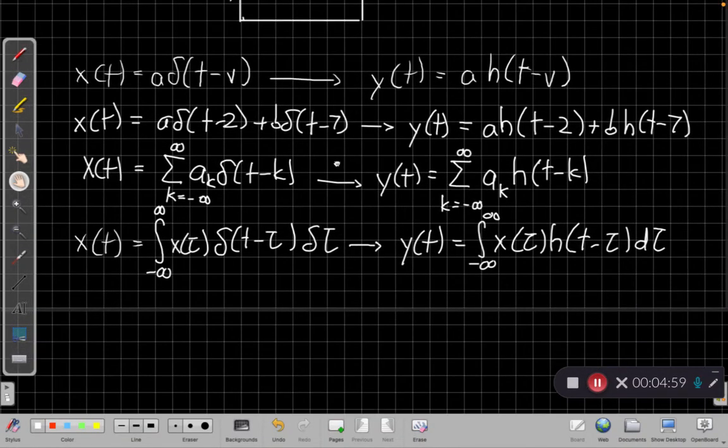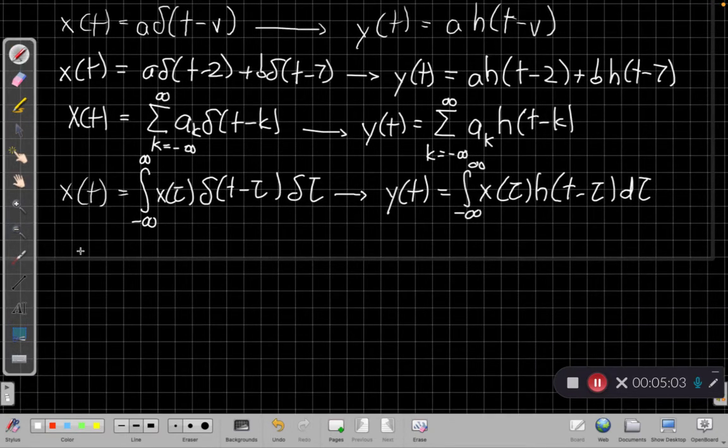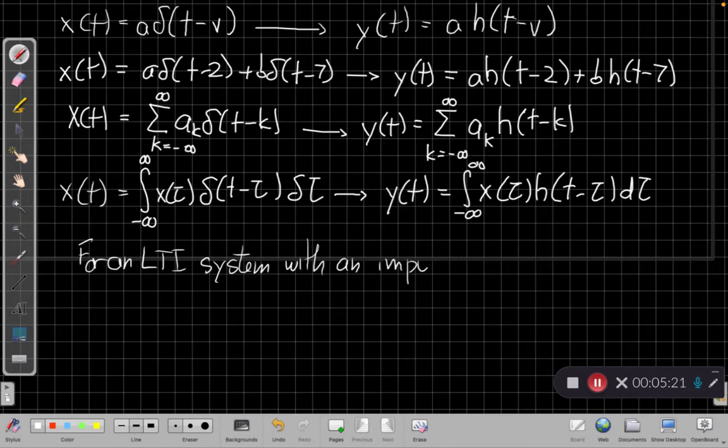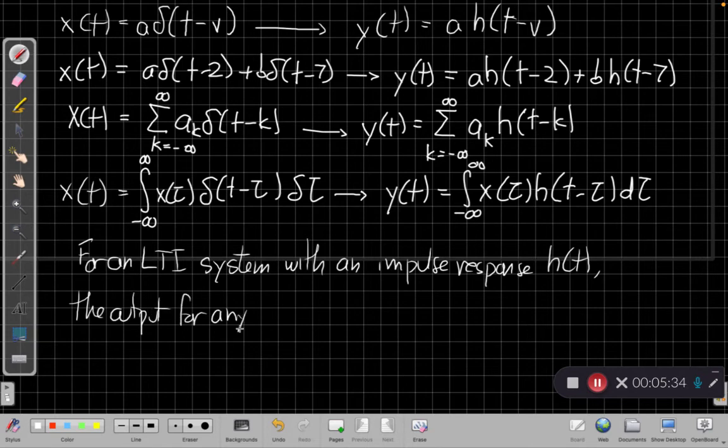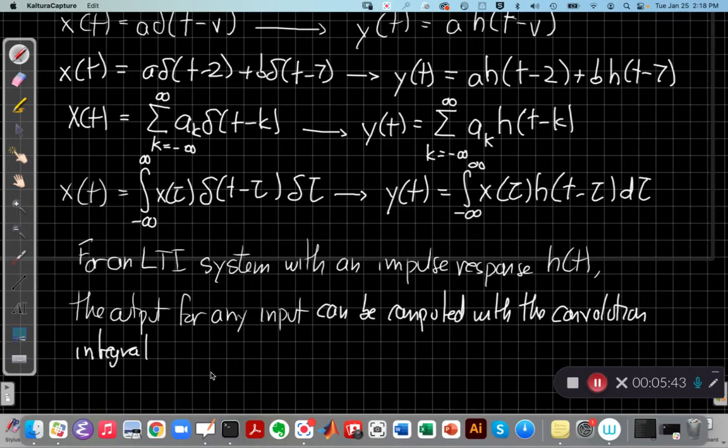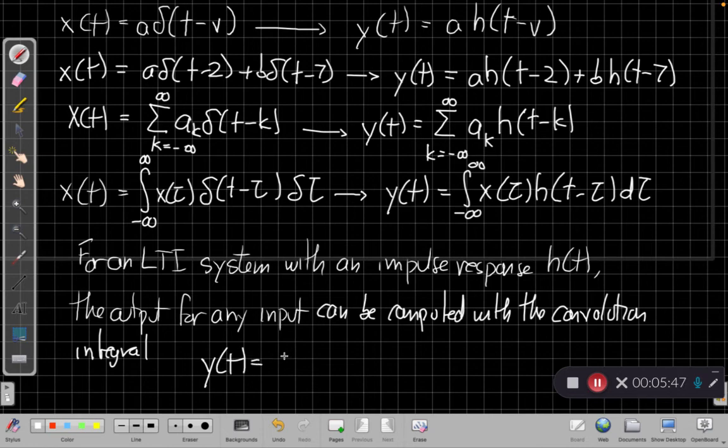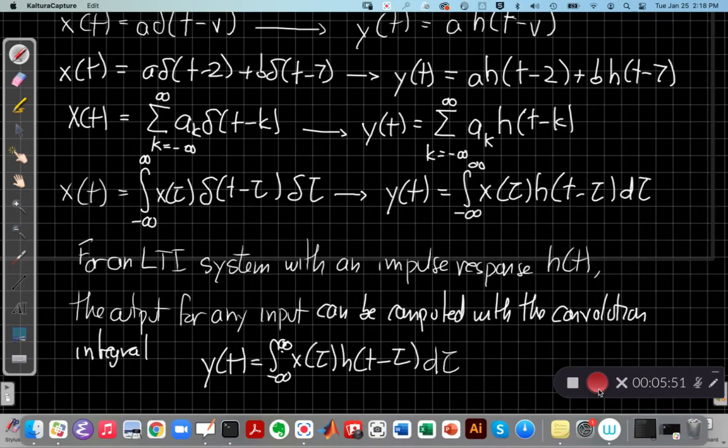That integral on the right-hand side is very important. The main result from this video is for an LTI system with impulse response H of T, the output for any input can be computed with a convolution integral, which takes the form Y of T equals the integral from minus infinity to plus infinity, X of tau times H of T minus tau D tau. This is our convolution integral. It's important enough that I'll draw a red box around this one today.